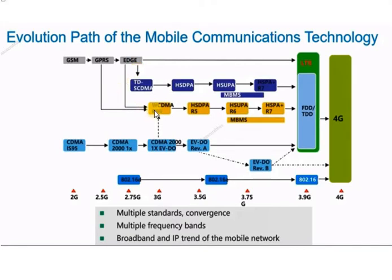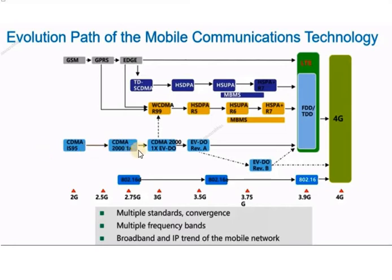The release for WCDMA was basically called R99. R99 had specifications for both core network and access network, and then R5, R6, and R7 were meant for higher data rate connectivity. The second stream is basically for CDMA standards, mainly used in North America, but this standard has also evolved towards 4G.